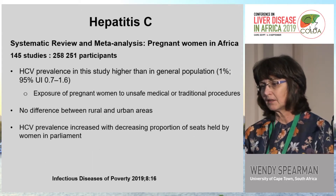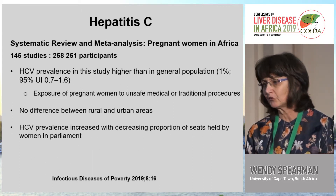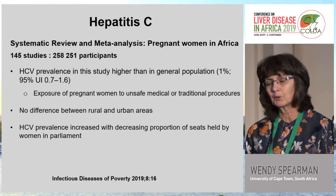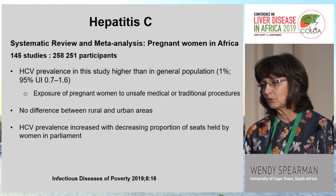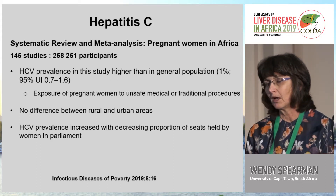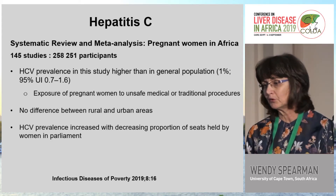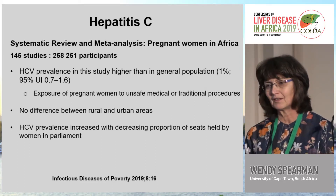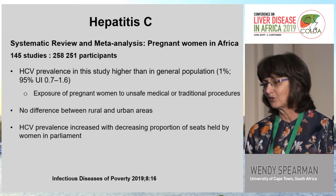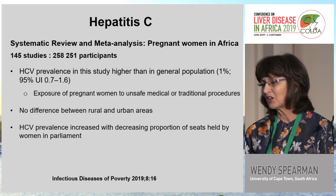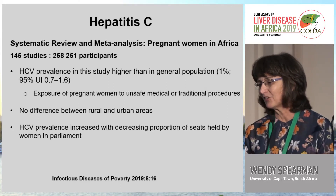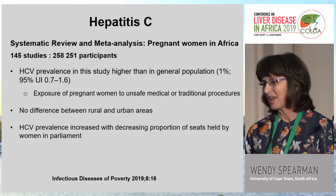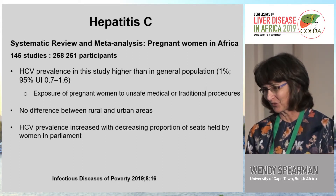The prevalence was higher in pregnant women than in the general population, possibly relating to exposure to unsafe medical or traditional procedures. Unlike hepatitis B, there was no difference between rural and urban areas. Interestingly, the study showed that prevalence increased with decreasing proportion of seats held by women in Parliament, showing that positions of power matter for public health outcomes.